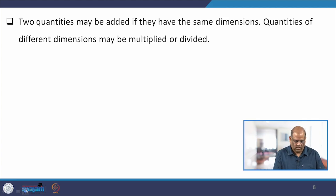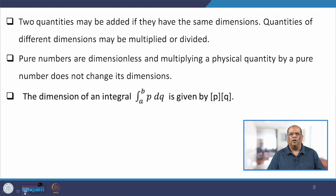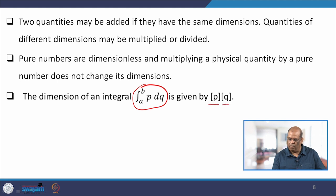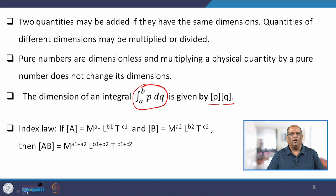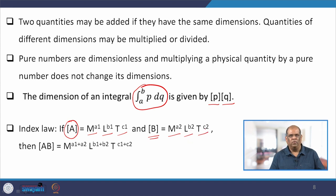The dimension of an integral ∫p dq is given by the dimension of p multiplied by the dimension of q. The important index law states that if physical quantity A has dimension M^a1·L^b1·T^c1 and quantity B has dimension M^a2·L^b2·T^c2, then their product A×B has dimension M^(a1+a2)·L^(b1+b2)·T^(c1+c2).